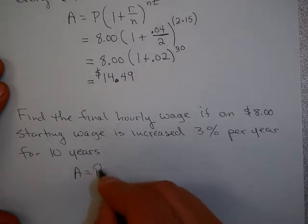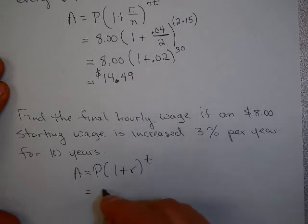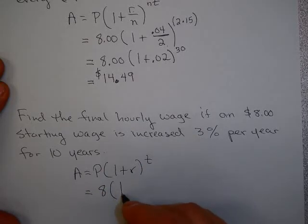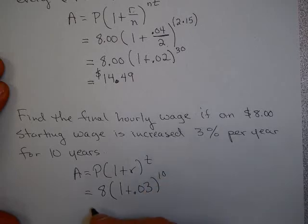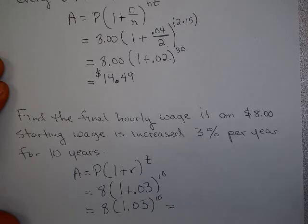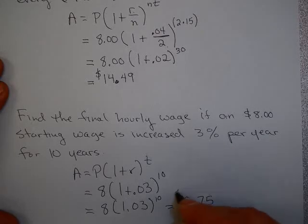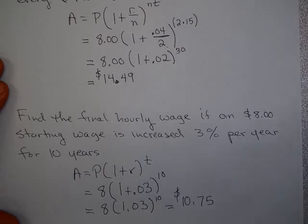So I'm just going to use my annual interest rate formula. I'm going to take an $8 wage, increase it 3% per year for 10 years. That's going to be 8 times 1.03 to the 10th. Now, if you do this on your calculator, this ends up to be about $10.75. I hope you have found this video useful.